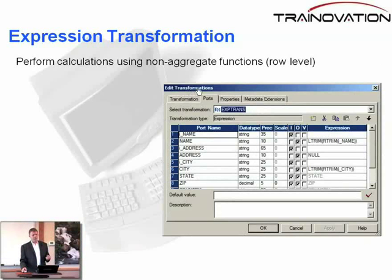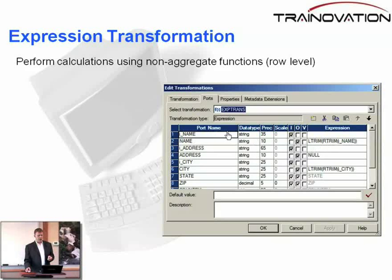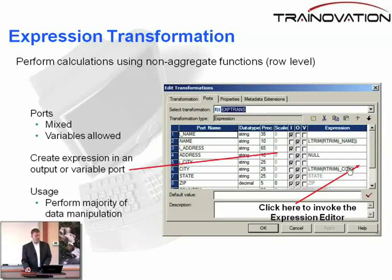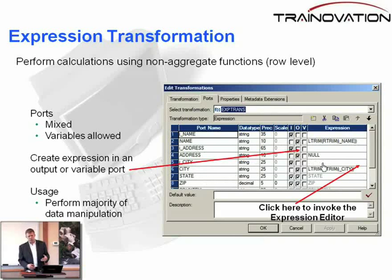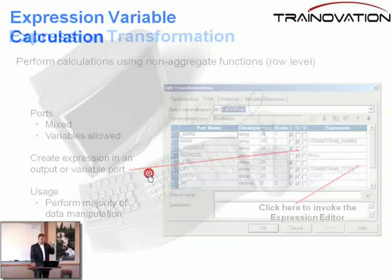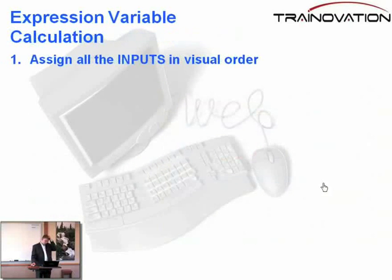So I'm looking at the edit transformation. I have an input field and an output field — no variable ports. But in the expression editor, we would invoke the expression editor to set up a variable port. As we demonstrated in the last lesson, we have to click the V column in order to get the variable port going.